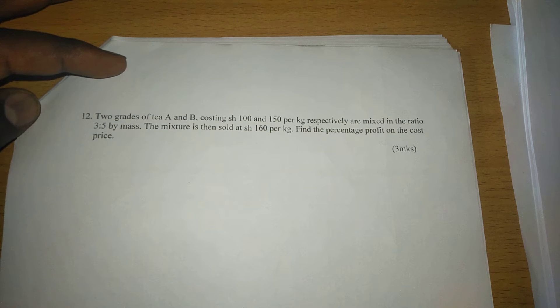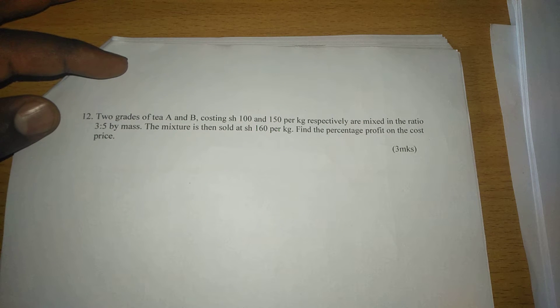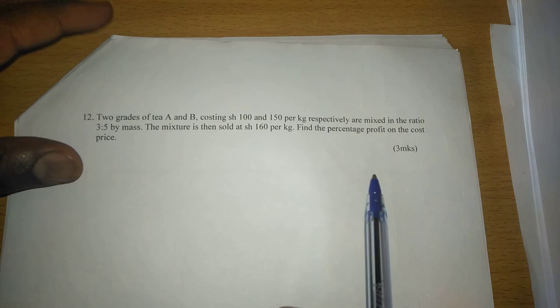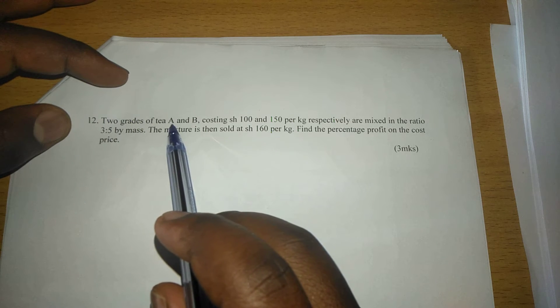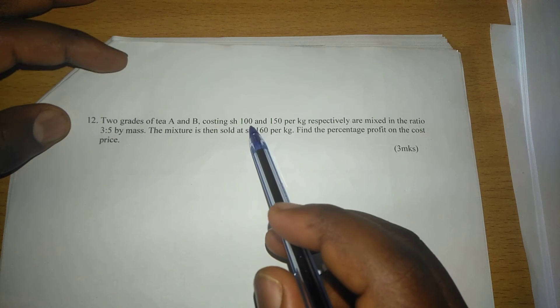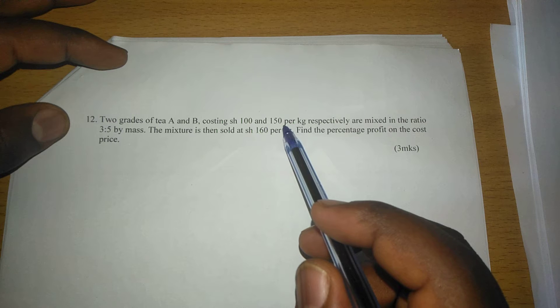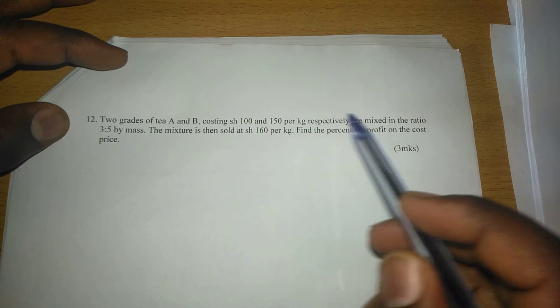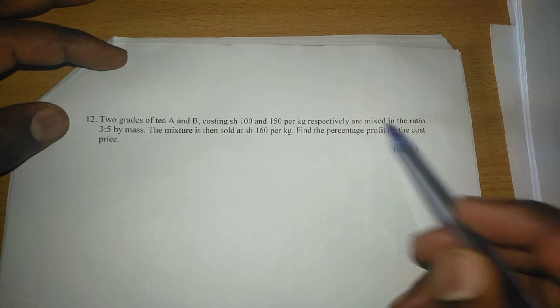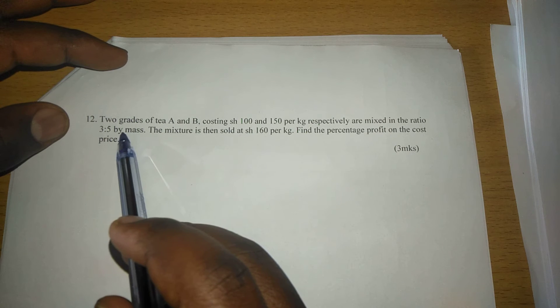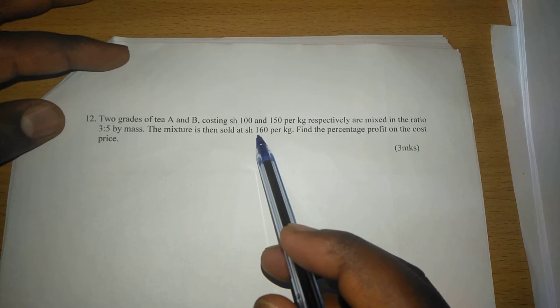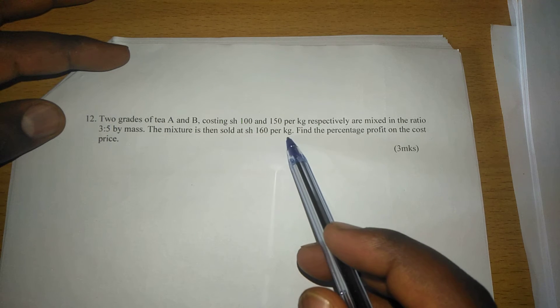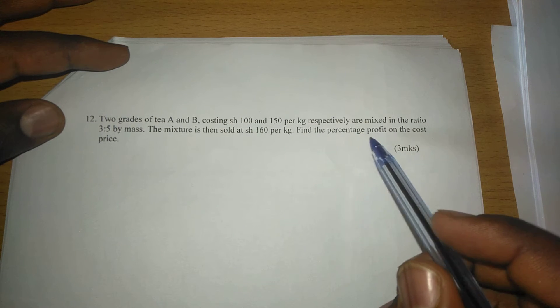Coming from mixtures, ratios and proportions, and that is why I'm embarking on mixtures questions very much. So we're given two grades of tea A and B costing 100 shillings and 150 shillings per kilogram respectively are mixed in the ratio 3:5 by mass. The mixture is then sold at 160 shillings per kilogram. Find the percentage profit on the cost price.